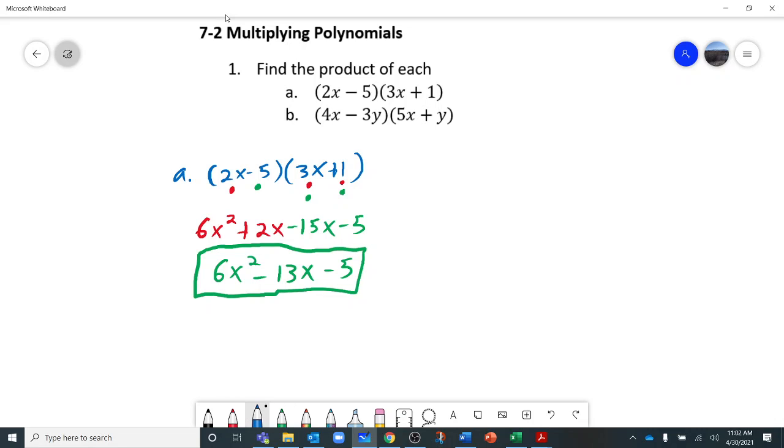Okay, now let's do B. For B, we have (4x - 3y)(5x + y). I'm going to do the same thing: multiply my 4x by my 5x and by my y.